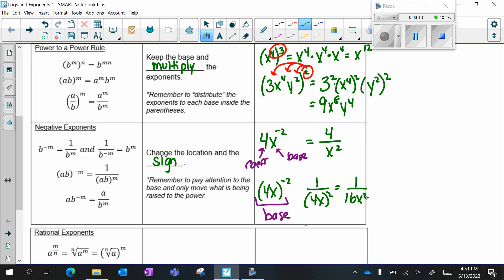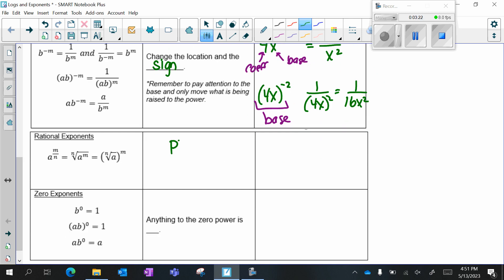Our rule for rational exponents is power over root. So x to the three halves is the square root of x to the third, because this is my power and this is my root. A square root is implied, but remember that if it's anything else, you have to show it.